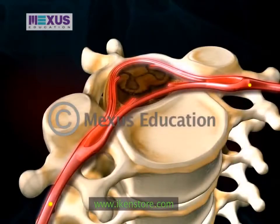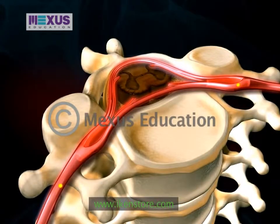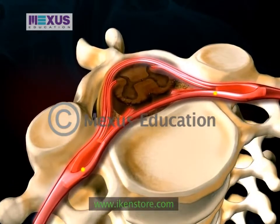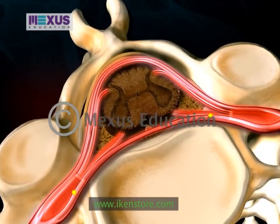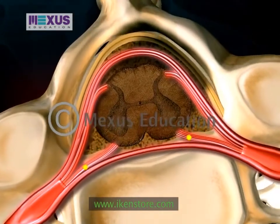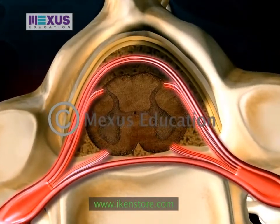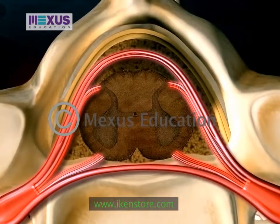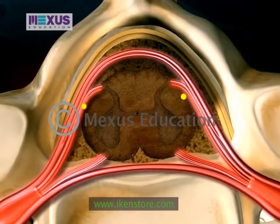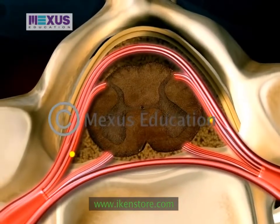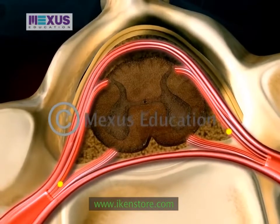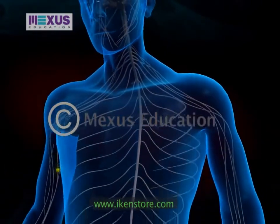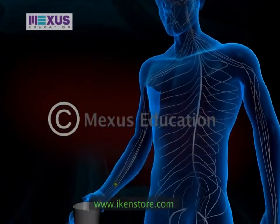The nerve cell dendrites respond to a stimulus and convert it into an impulse in a sensory neuron. The nerve impulse from a receptor passes through an axon terminal of the sensory neuron in the spinal cord. In the spinal cord, the sensory impulse generates an outgoing motor impulse by an association between the sensory neuron and the motor neuron. The motor neuron then carries an impulse to the effector organs like a muscle or a gland.